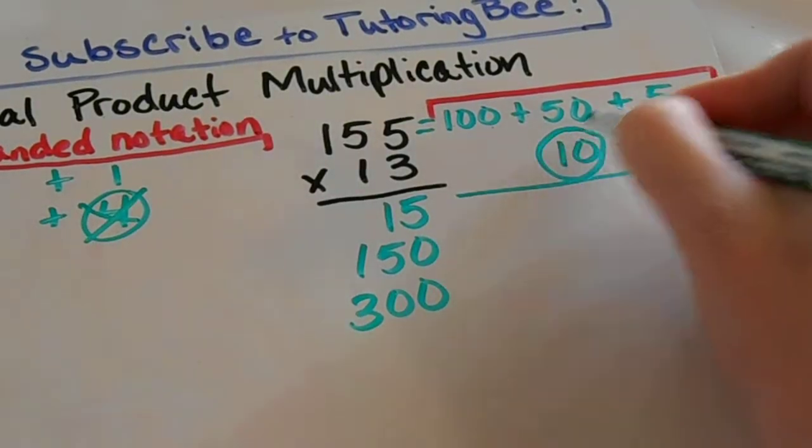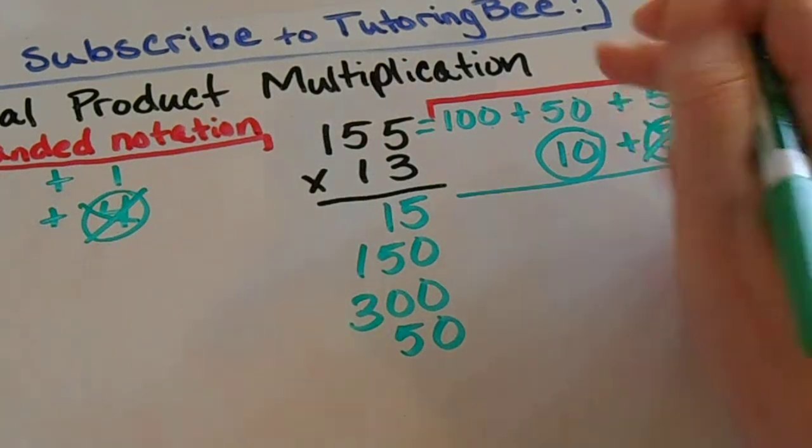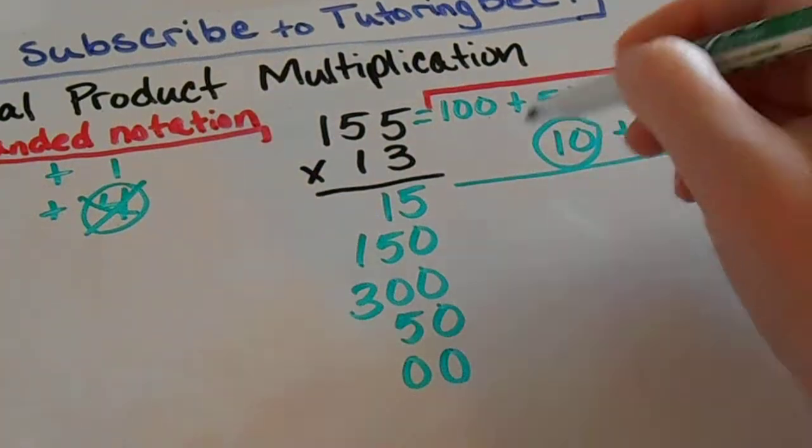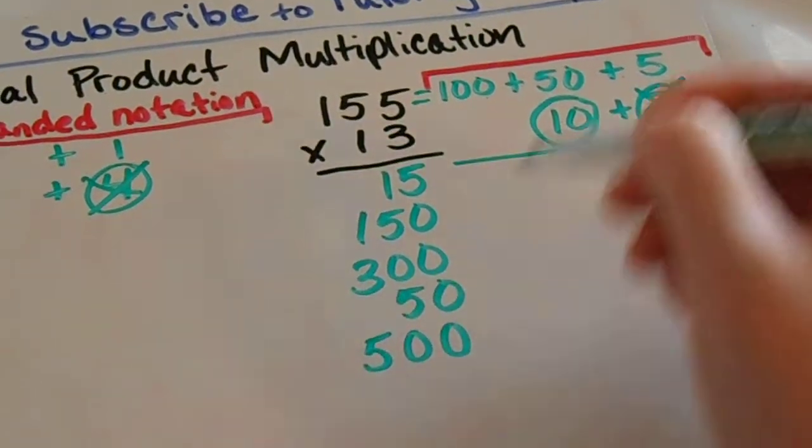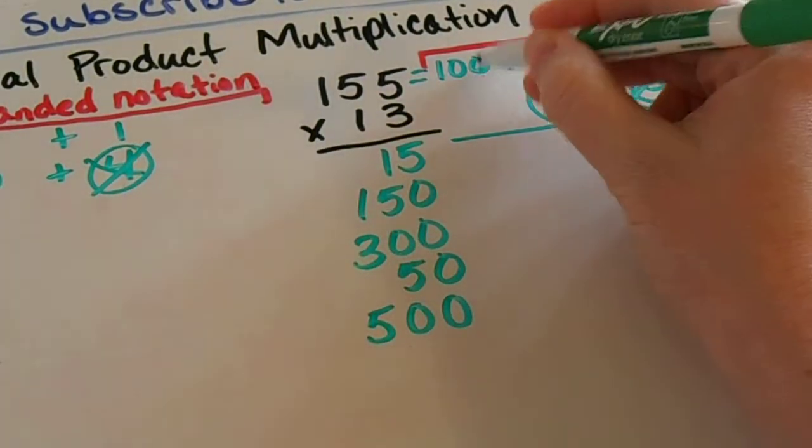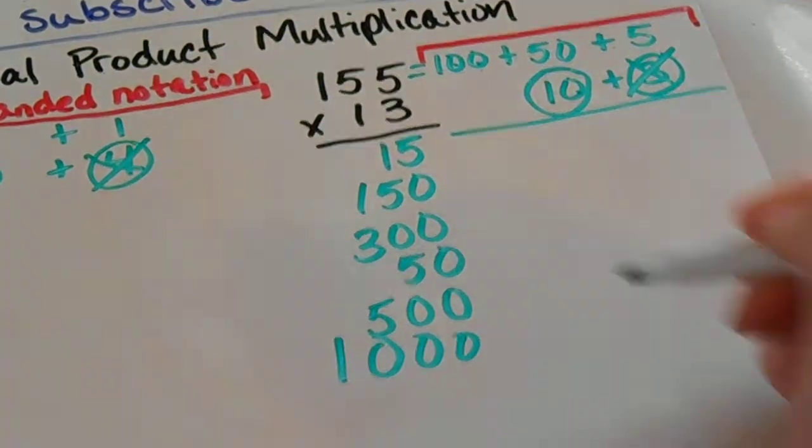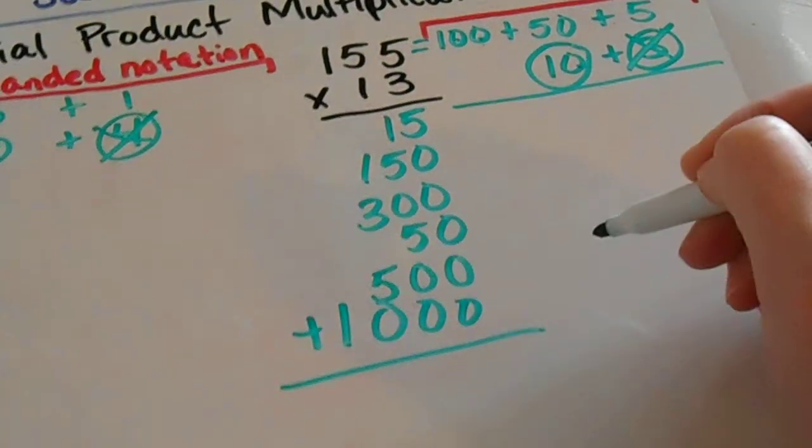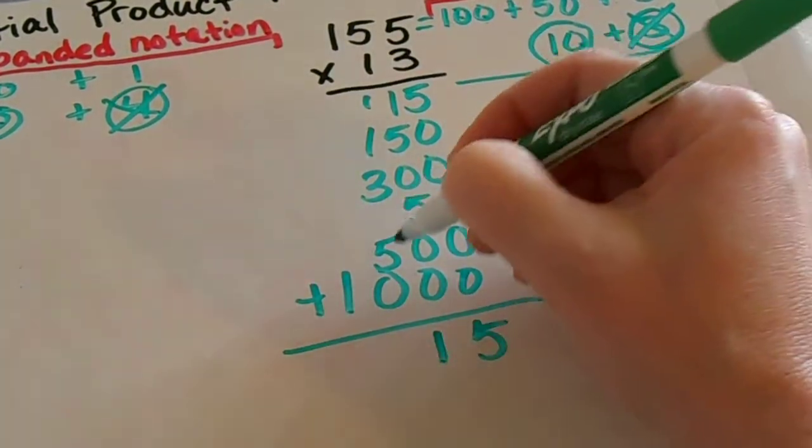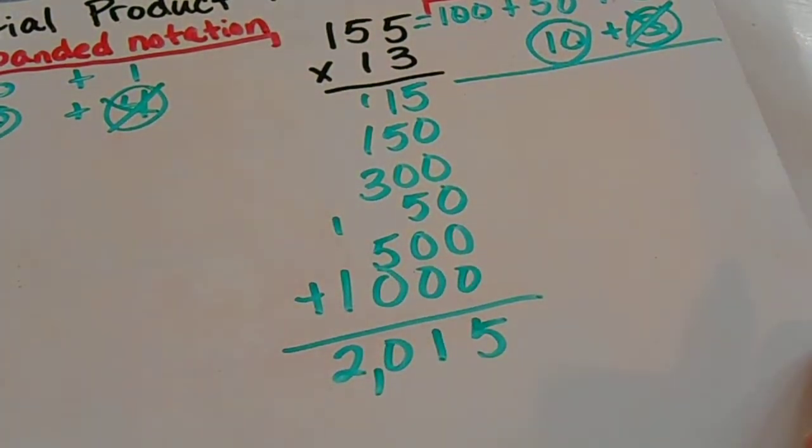Now I'm going to move over to my 10. 10 times 5 is 50. 10 times 50. Again I've got 2 zeros. So that means I'm going to have 2 zeros in my answer. And then 1 times 5 is 5. And then here 10 times 100. I've got 1, 2, 3 zeros. 1, 2, 3 zeros. And then 1 times 1 is 1. Add all of those numbers up. 11. So I come up with 2015.